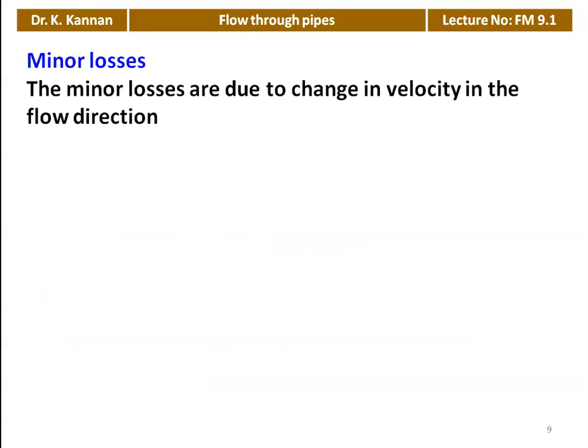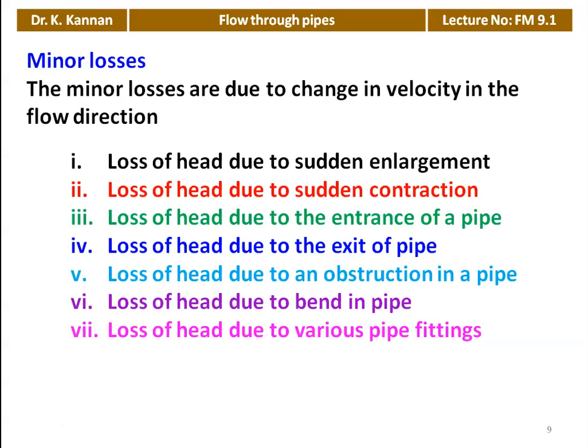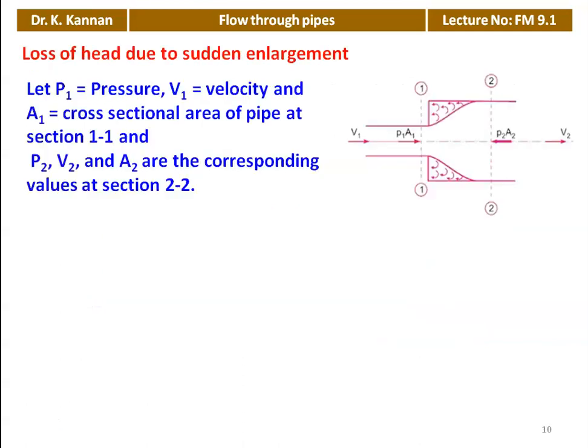Minor losses are due to changes in velocity and flow direction. There are different reasons: loss of head due to sudden enlargement, sudden contraction, entrance of the pipe, exit of the pipe, obstruction in the pipeline, bend in the pipe, and various pipe fittings. There are equations available to calculate each minor loss.